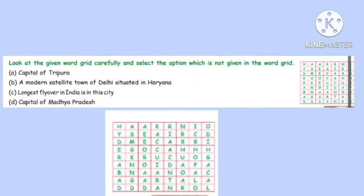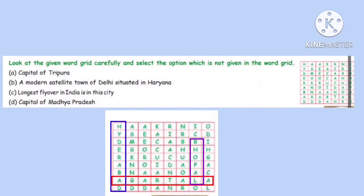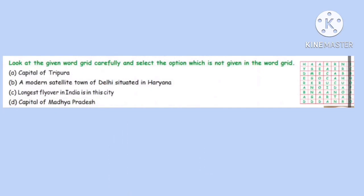Question 6. Look at the given word grid carefully and select the option which is not given in the word grid. Statement A: Capital of Tripura is Agartala. Statement C: The longest flyover in India — the Narsimha Rao flyover — is in Hyderabad city; found in the word grid. Statement D: Capital of Madhya Pradesh is Bhopal; also found. The option left is B: a modern satellite town of Delhi situated in Haryana. Satellite town means a smaller municipality next to a larger city. That town is Gurgaon — Noida is also a satellite town but situated in UP. Hence option B, Gurgaon, cannot be found in the word grid.